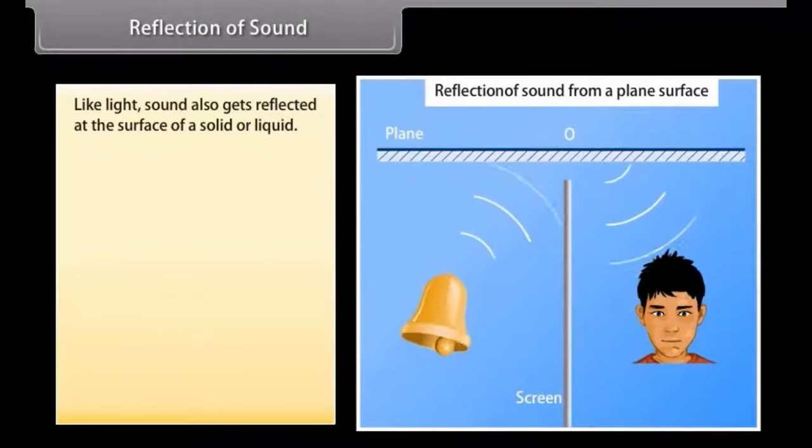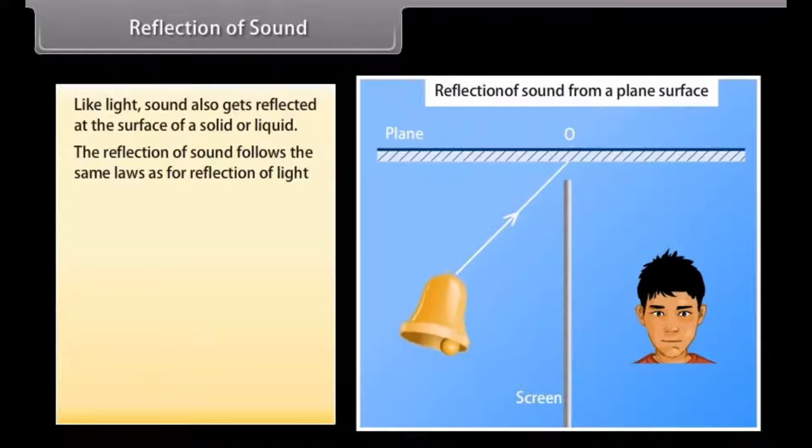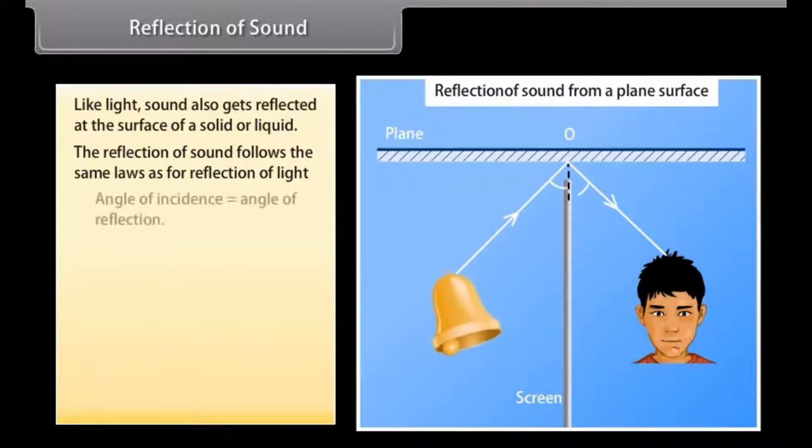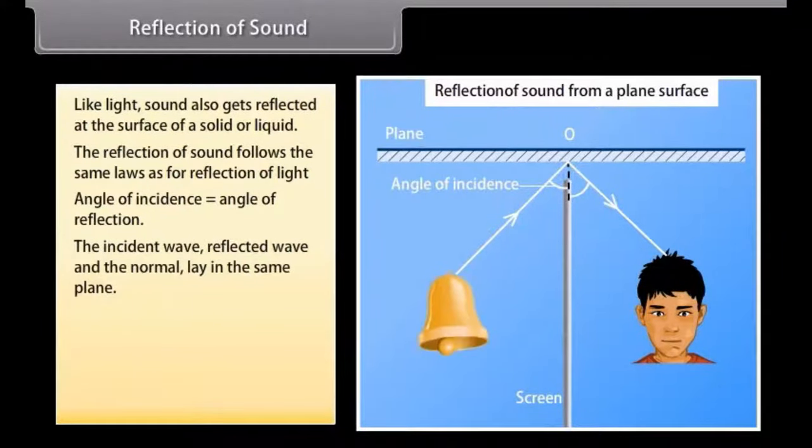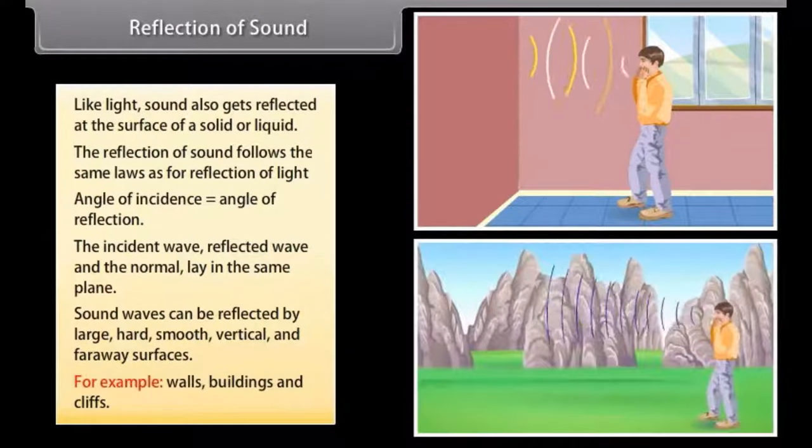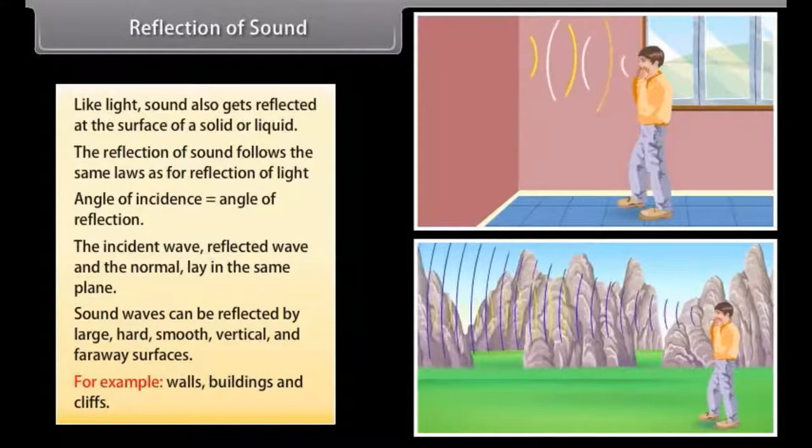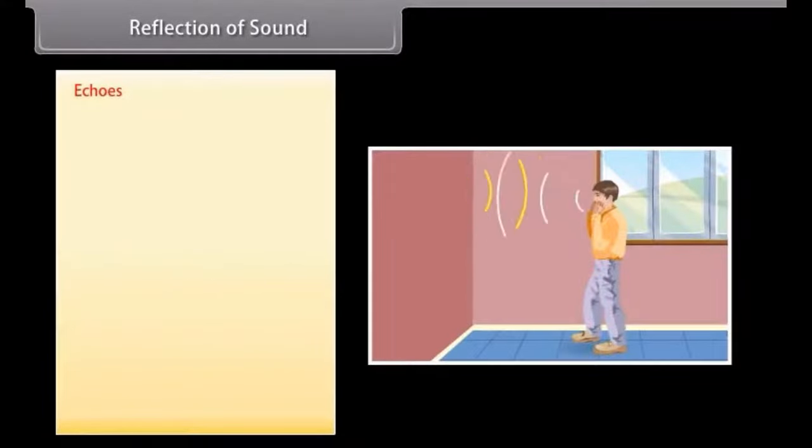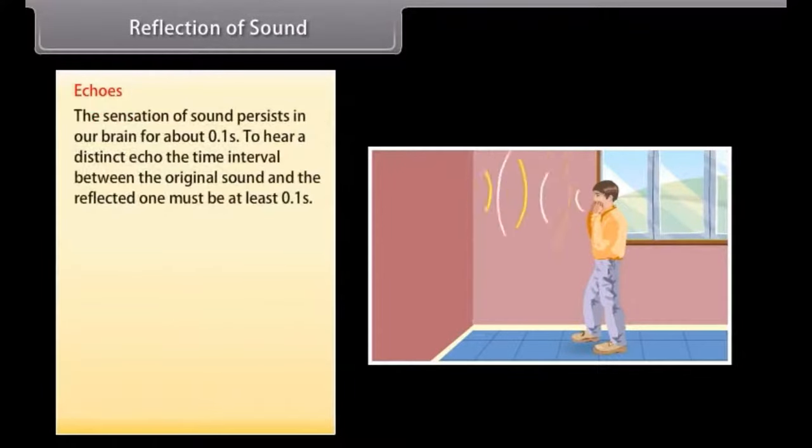Reflection of sound. Like light sound also gets reflected at the surface of a solid or liquid. The reflection of sound follows the same laws as for reflection of light. Angle of incidence is equal to the angle of reflection. The incident wave reflected wave and the normal lie in the same plane. Sound waves can be reflected by large hard smooth vertical and faraway surfaces e.g. walls buildings and cliffs. Echoes are produced by the reflection of sounds from such surfaces. The sensation of sound persists in our brain for about 0.1 second.